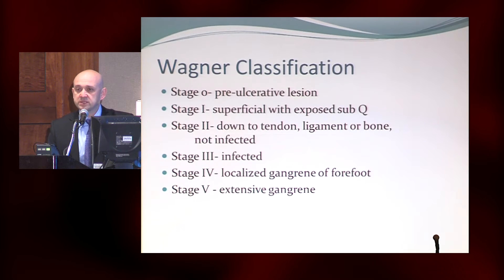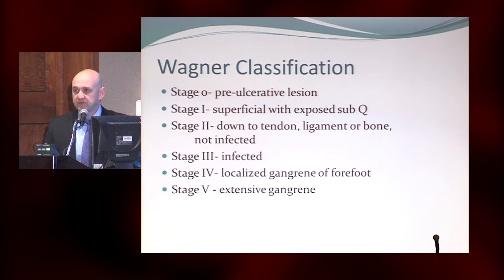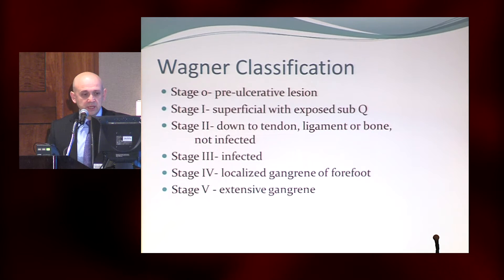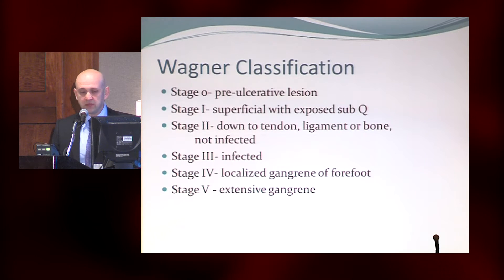One of the first classifications — probably the most popular classification for wounds — has been the Wagner, from zero to stage five. Everyone knows this classification: nurses, podiatrists, vascular surgeons, and so forth. The problem and the pitfalls with this classification system is that it doesn't adequately describe foot ulcers. It only talks about infection in one of the categories and discusses vascular disease in the form of gangrene only.